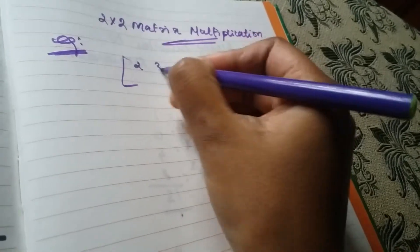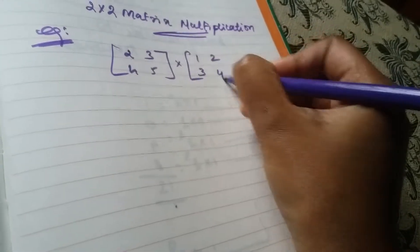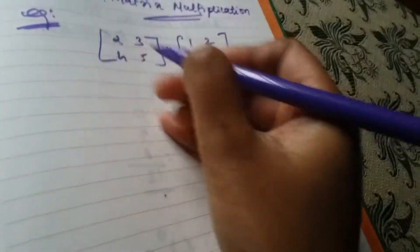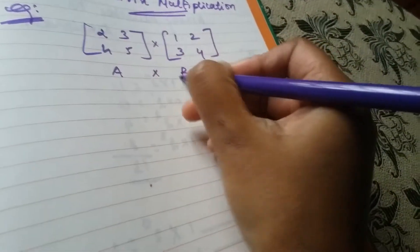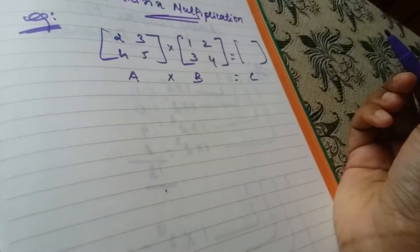We have the first matrix with elements 2, 3, 4, 5 and the second matrix with elements 1, 2, 3, 4. A times B equals C. We will find it.